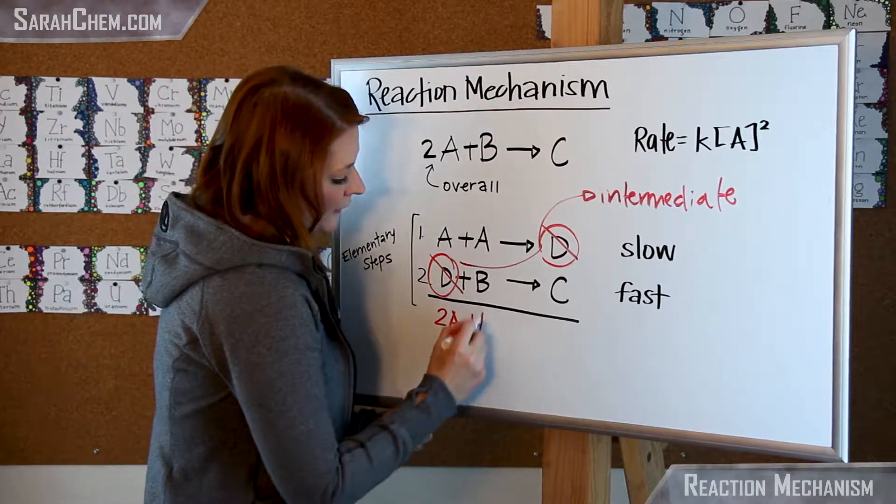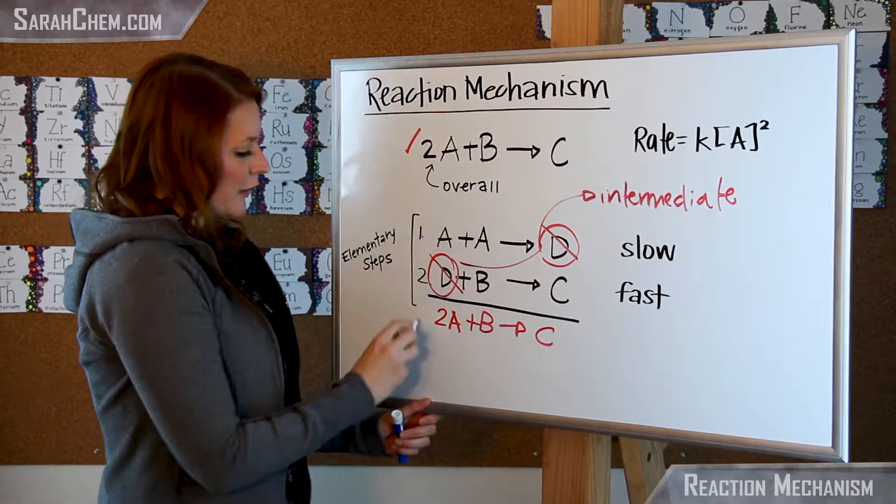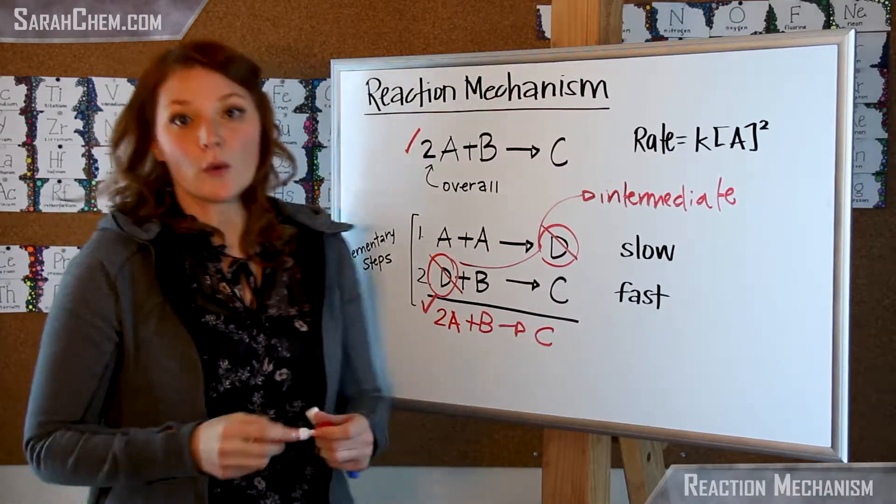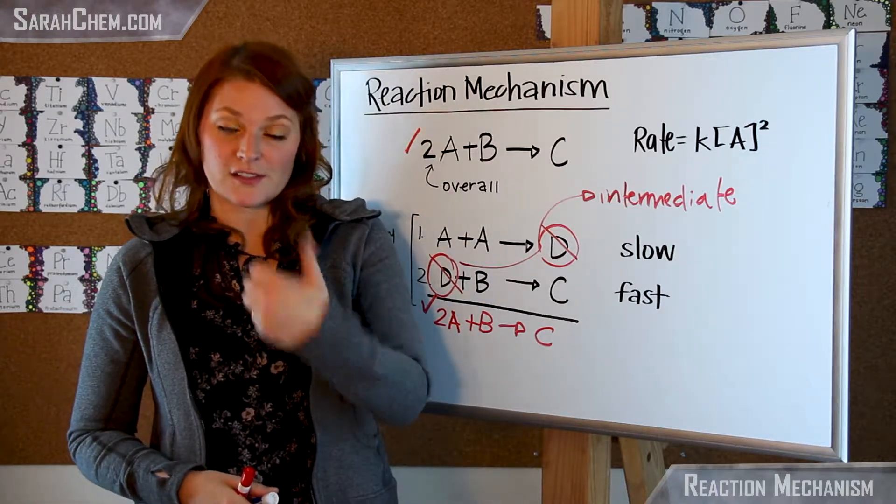So that means there will be no D in this overall reaction as I'm adding these two together. Then I see I have one B and they will form a C. So you can see that this reaction and this reaction are equivalent with one another. So that means that my reaction mechanism passes the first step.